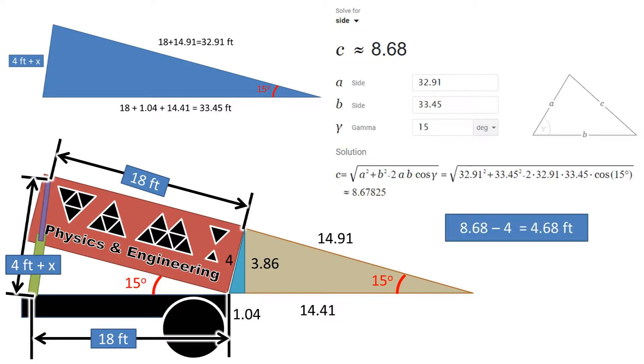Subtracting 4, the initial length, we get an extension of 4.68 feet for the hydraulic system. This is beyond the initial height of 4 feet, so we would need at least a 3-tiered hydraulic system, in this case, to lift the bed 15 degrees.